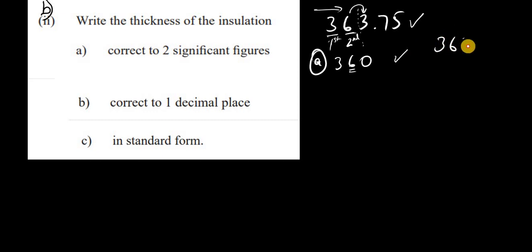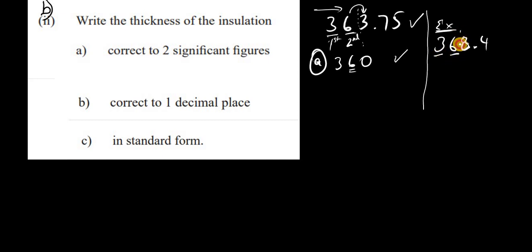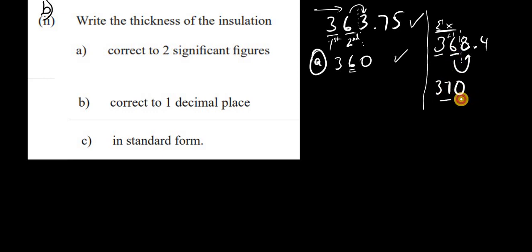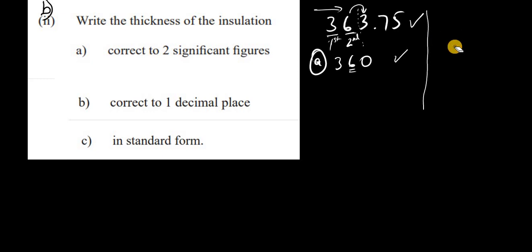For example, if we had 368.4 and wanted to round to 2 significant figures: the first significant figure is 3, the second is 6. The first digit being chopped off is 8, which is 5 or more, so we add 1 to the 6, making it 7. But we must maintain the place value, so the answer is 370, not just 37. You can see 370 is very close to 368.4.